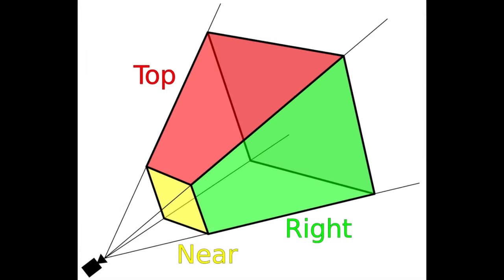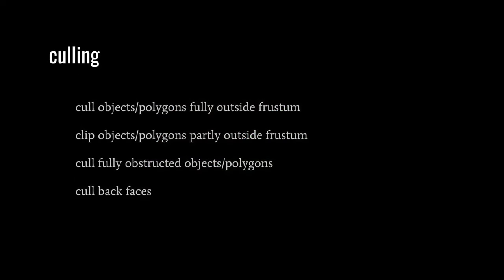Here we see what's called the frustum — like a lopsided pyramid with its top chopped off — which represents the bounding area of what's going to end up in our image. Everything outside the frustum won't appear in the image: either it's outside our field of view, too close to the camera on the wrong side of the near-clipping plane, or too far away past the far-clipping plane. The whole process of discarding objects, polygons, vertices, and pixels not going to end up in the image is called culling.